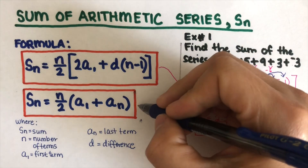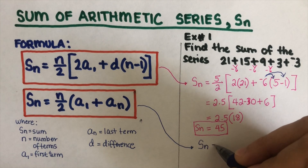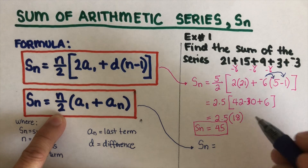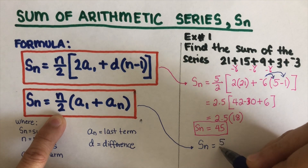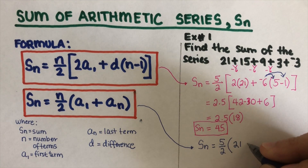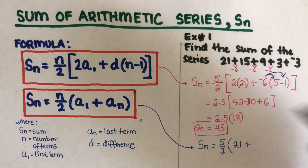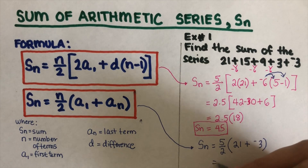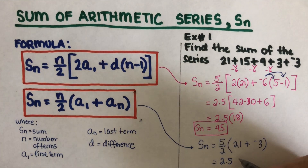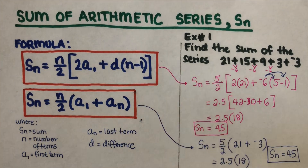Now let's use the second equation. S of n equals n over 2 times (a1 plus a_n), where a1 is the first term and a_n is the last term. So that's 5 over 2 times (21 plus negative 3). That is 2.5 times 18, which is 45. The answer matches — both equations give the same result, so you can use either one.